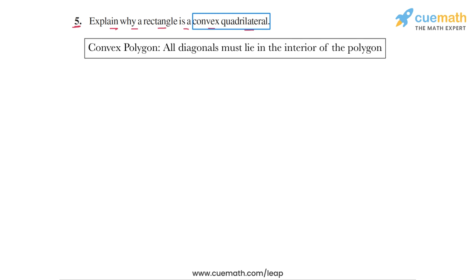Let us start by discussing the meaning of a convex polygon. A convex polygon is any polygon for which all diagonals lie in the interior of the polygon. Any such polygon is a convex polygon.